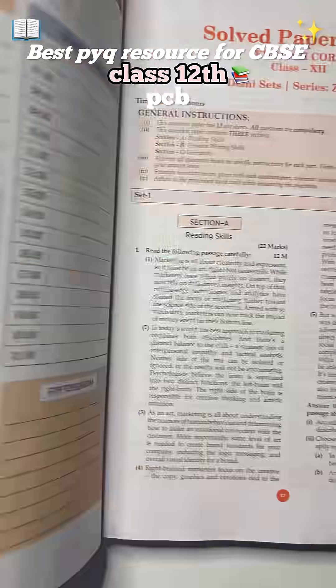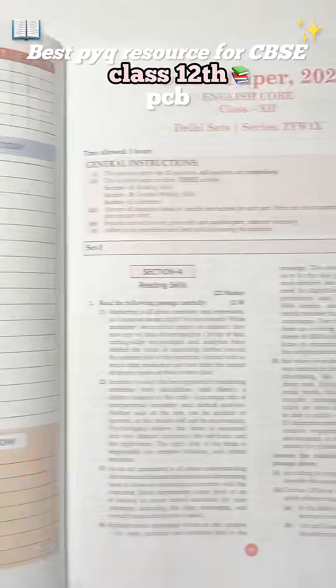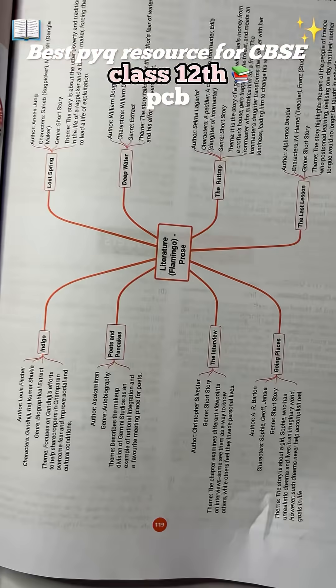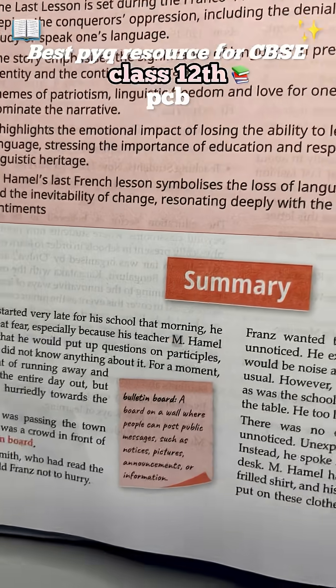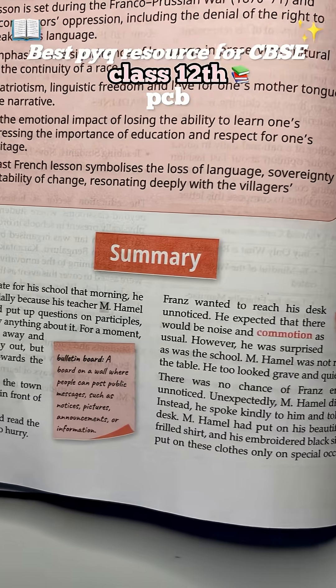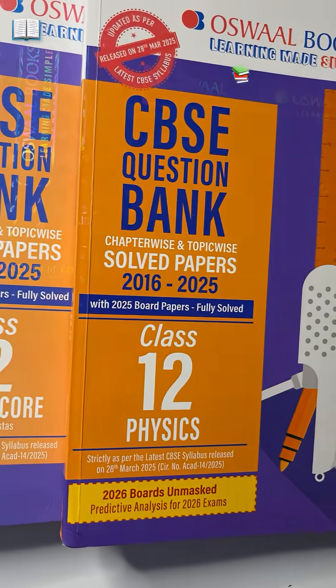For English, you'll get a daily planner, all writing section content, plus summaries and mind maps for each chapter. Oswal provides question banks for all subjects — just go to their website.